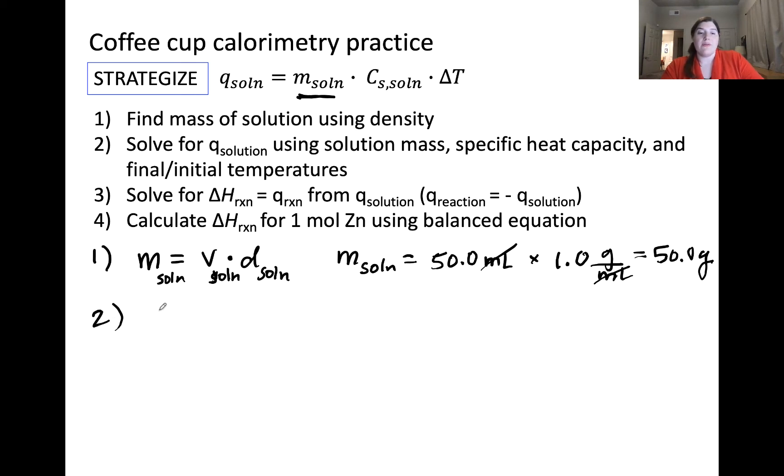Next, we can solve for Q of solution using the above expression. We now have the mass of the solution. We have the specific heat of the solution given in the problem. And we have the final and initial temperature of the solution. The final temperature was reported to be 23.7 degrees Celsius, and the initial temperature was reported to be 22.5 degrees Celsius.